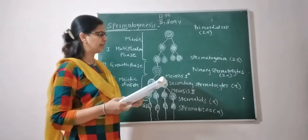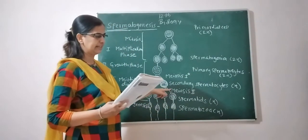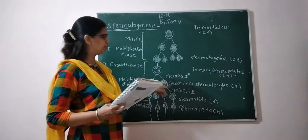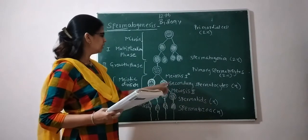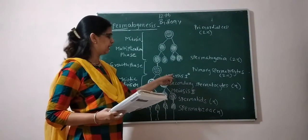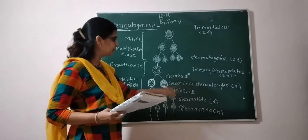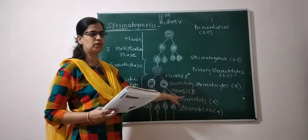The secondary spermatocytes undergo a second meiotic division, which is a mitotic-type division. From this, secondary spermatocytes produce 4 haploid cells.